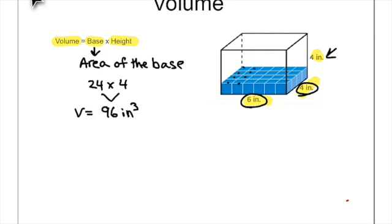There are 24 cubes on the bottom layer, and we can make four of these layers — that's why we took 24 times 4 to find the volume of this rectangular prism.